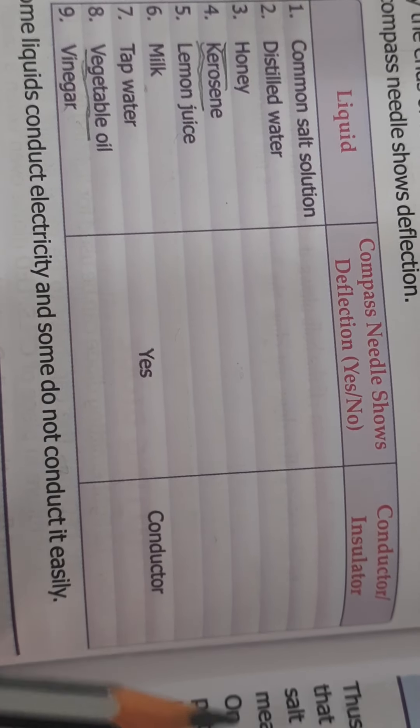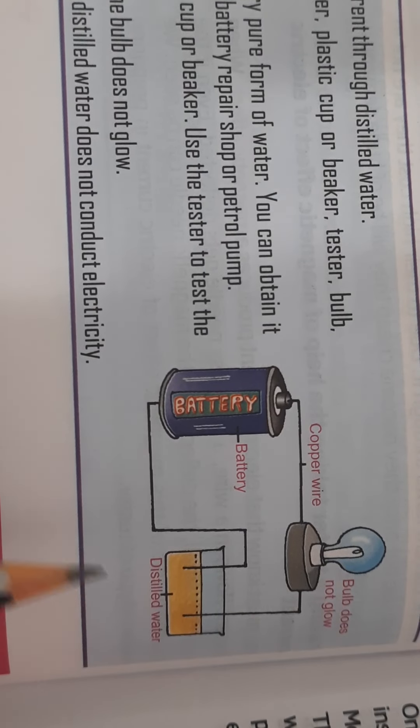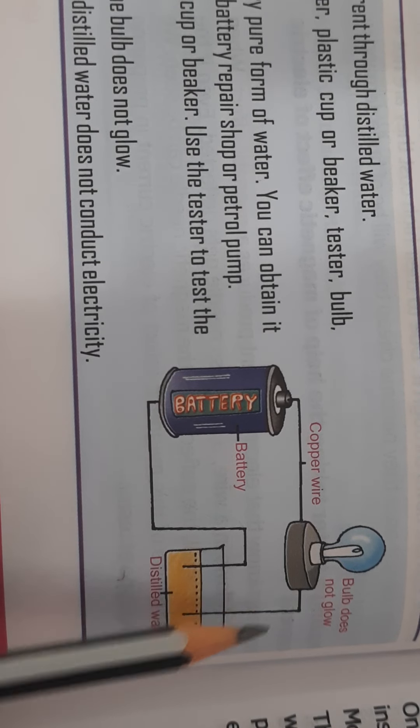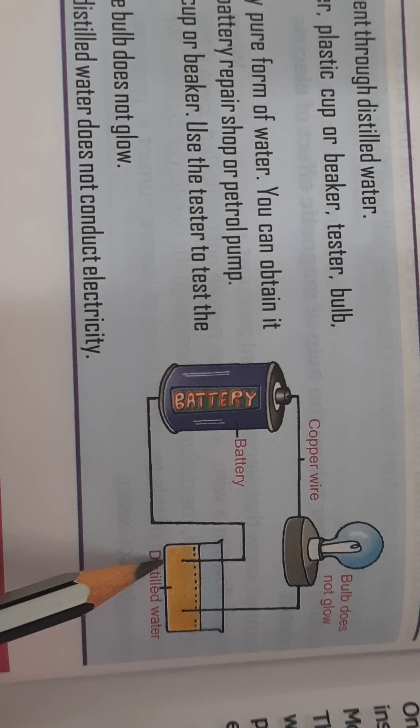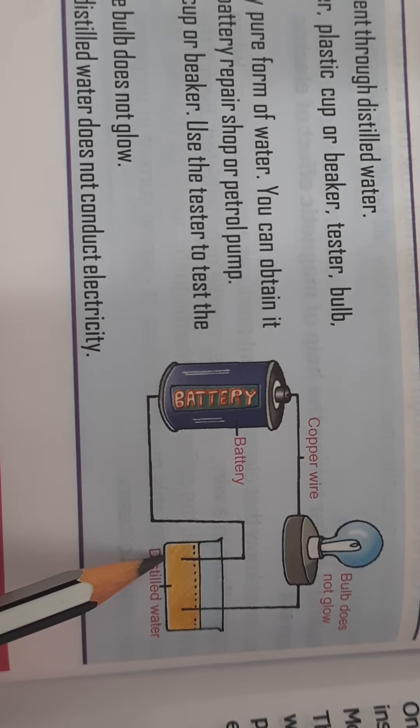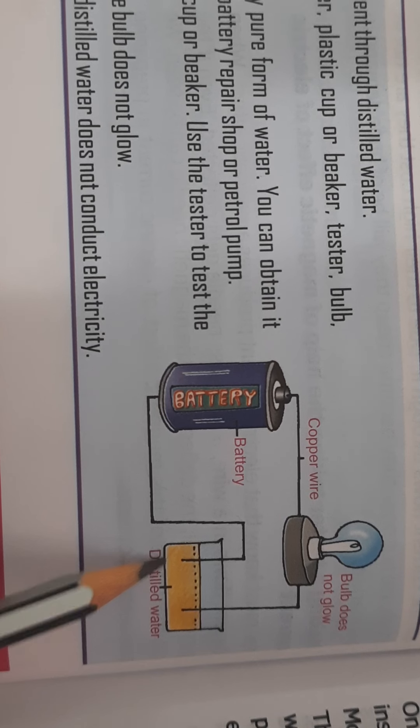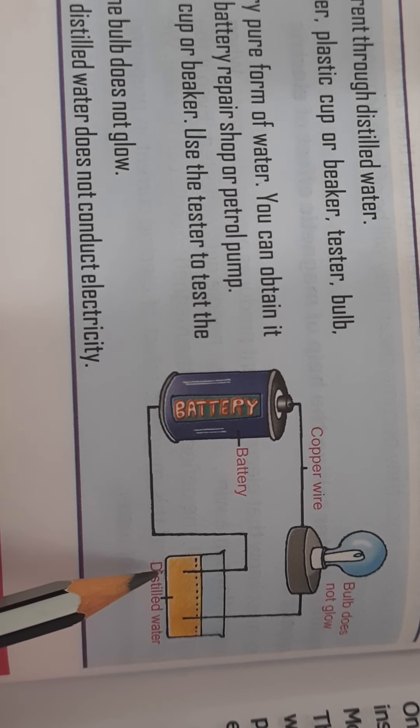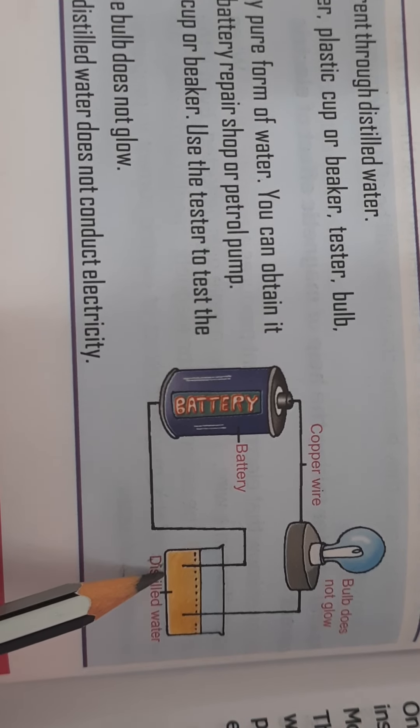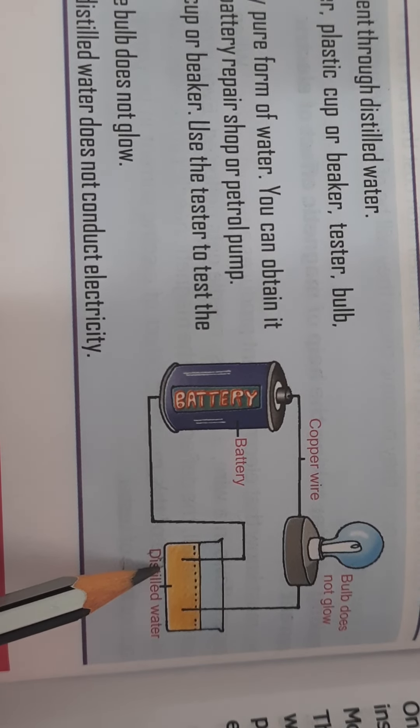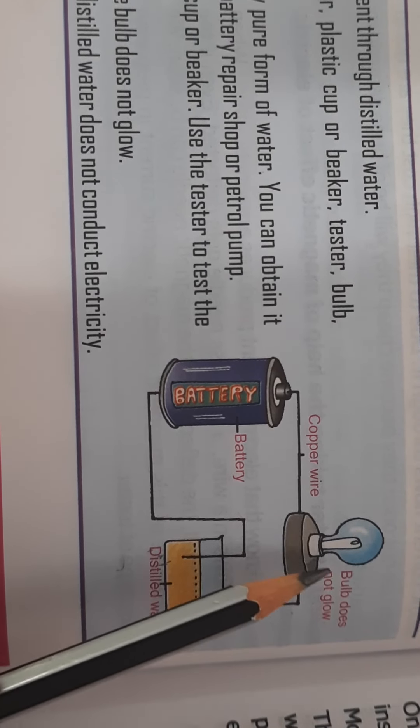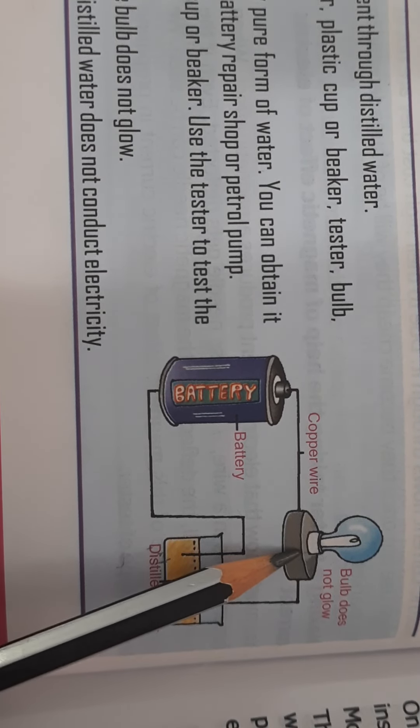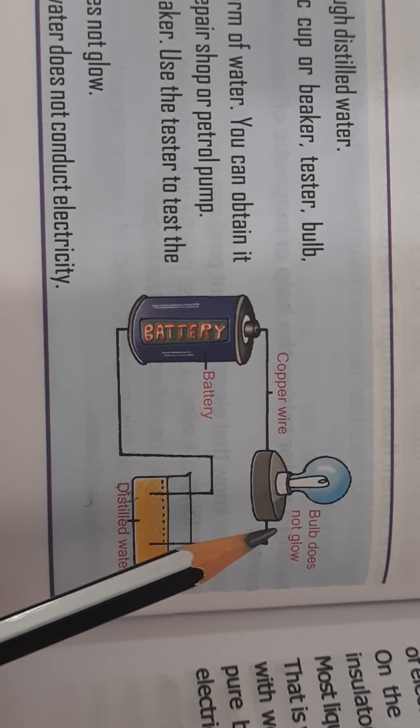But what about distilled water? Will distilled water show any deflection? If you take a circuit and then you take distilled water, you get distilled water usually in car battery repair shops or petrol pumps. Distilled water is pure. It does not contain any kind of impurities. You will see that when you dip in distilled water, the bulb will not glow. Why is it so? Because distilled water is free of any kind of impurities. So the bulb will not glow.